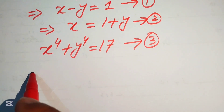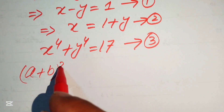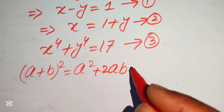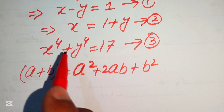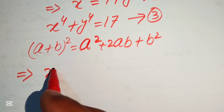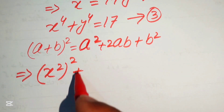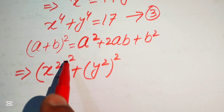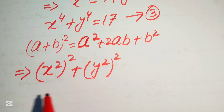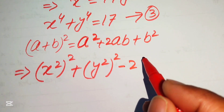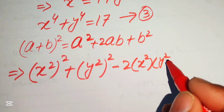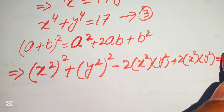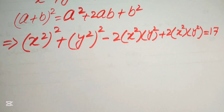Recall that (a+b)² = a² + 2ab + b². We rewrite the left-hand side: x⁴ = (x²)² and y⁴ = (y²)². To complete the square, we add and subtract 2x²y², giving (x²)² + (y²)² − 2x²y² + 2x²y² = 17.